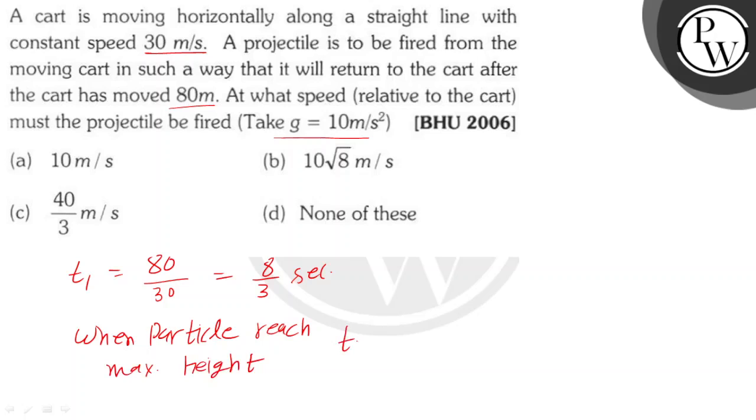We have the equation v equals u minus g times t, because gravitational acceleration is negative. At the highest point, or maximum height, the final vertical velocity component is 0.